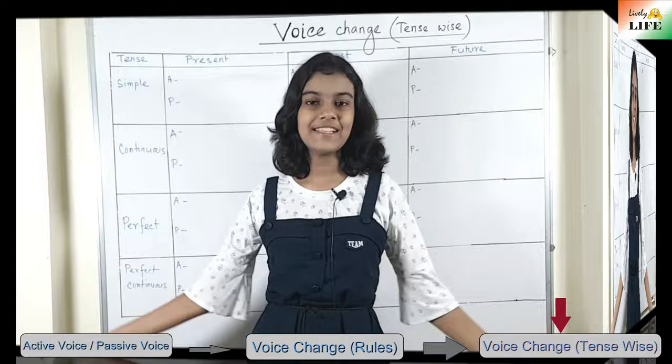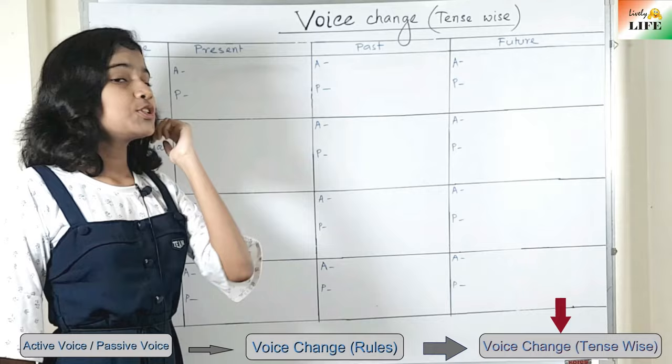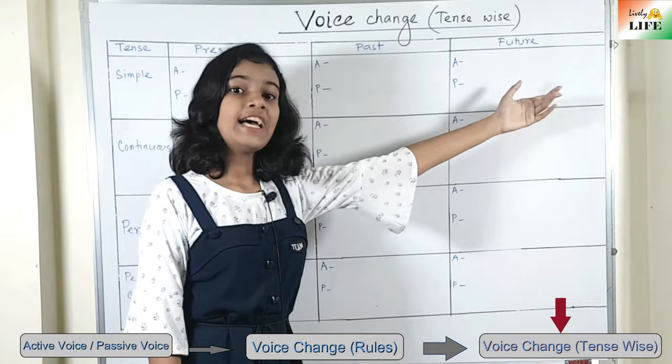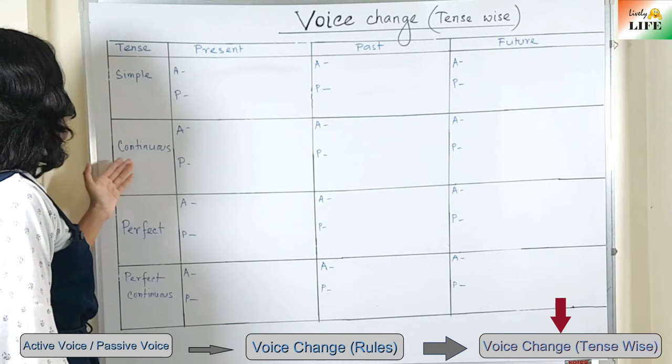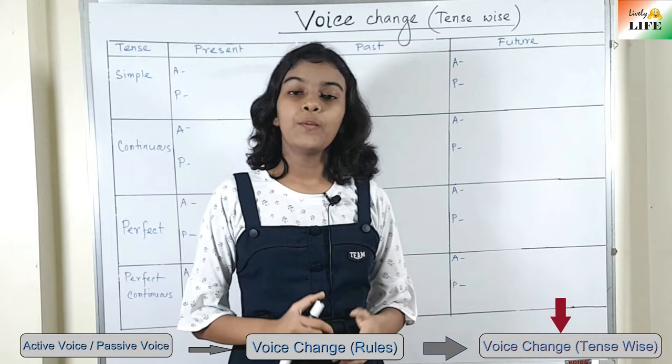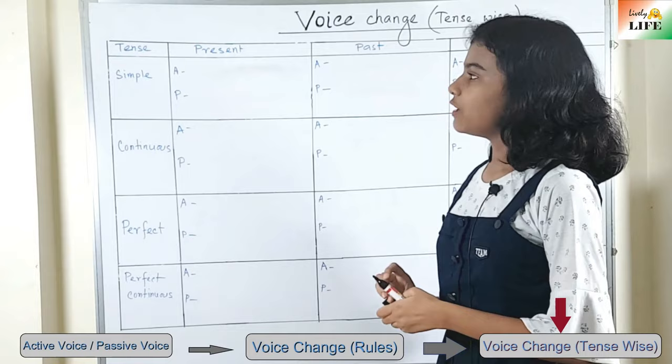As you can see, I have already made a table of all 12 tenses. There are three types of tenses: present, past, and future, and these three are divided into four subdivisions: simple, continuous, perfect, and perfect continuous. We are going to look at the voice change for all 12 tenses. Let's start with simple present tense.